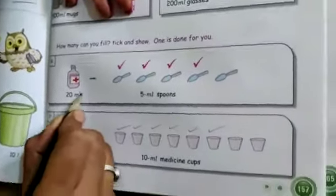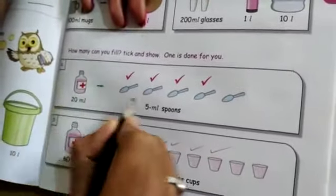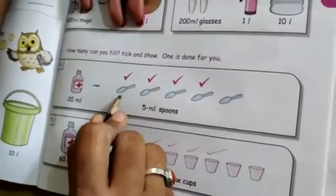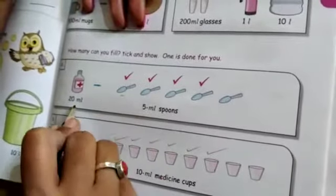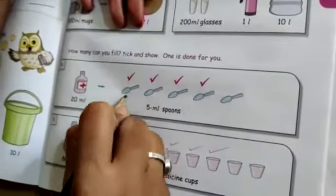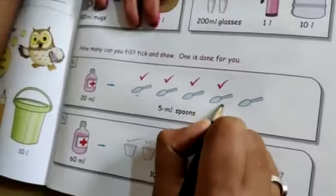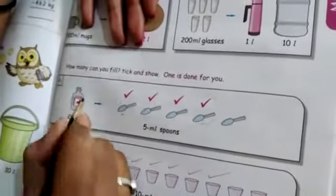Here 20 ml. This ink bottle is 20 ml. Here how many? 1 spoon having 5 ml. 20 ml container, how many spoons we have to put here? 5, 10, 15, 20. 4 spoons if I put means it becomes 20 ml.